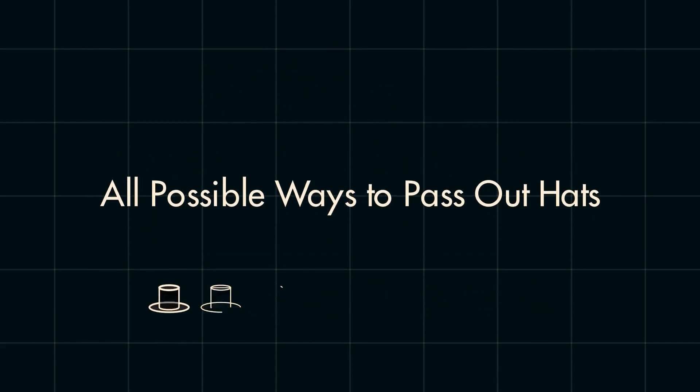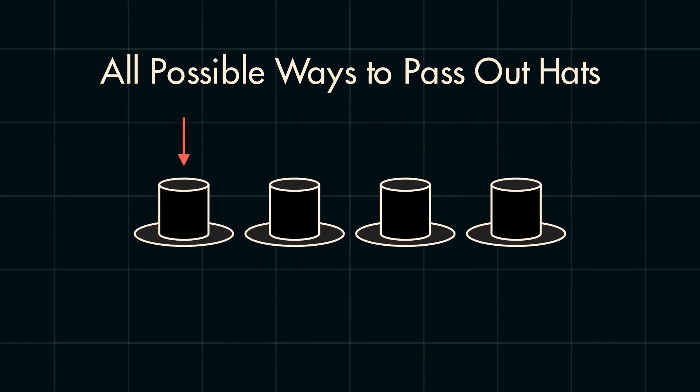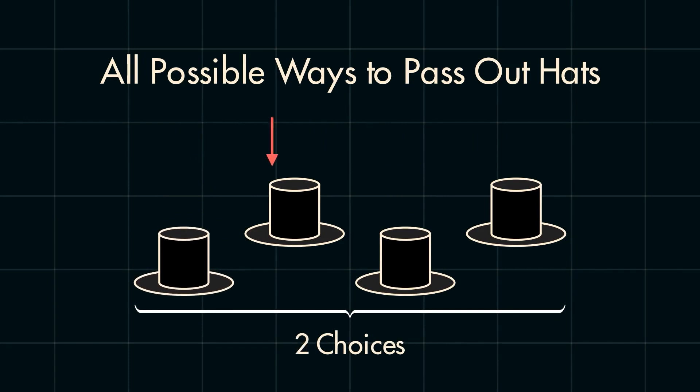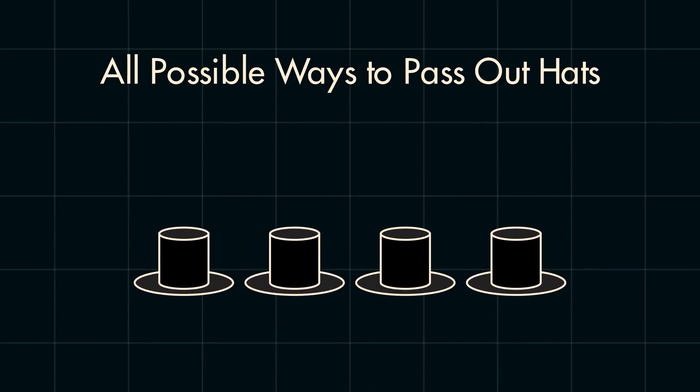Now, the first problem isn't too hard. Imagine it like you're the one passing the hats out. First, you have the choice between four hats, and you pick one to pass out. With that hat passed out, you now have the choice of three remaining hats. You then have two choices of hats, and finally, one hat left to give. Many of you will recognize this as finding the permutations of four items, which of course is 4 factorial, or 24.